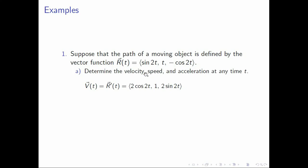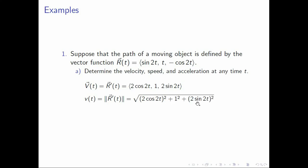Next, let's get the speed. Recall that the speed is just the magnitude of our velocity function. To get the magnitude, we take the square root of the sum of the squares of the components: the square root of (2 cosine 2t) squared plus 1 squared plus (2 sine 2t) squared. Simplifying, we have 4 cosine squared 2t and 4 sine squared 2t, and combining them using the Pythagorean identity gives 4, plus 1. So we have the square root of 5. This is the speed at any time t — a constant speed.